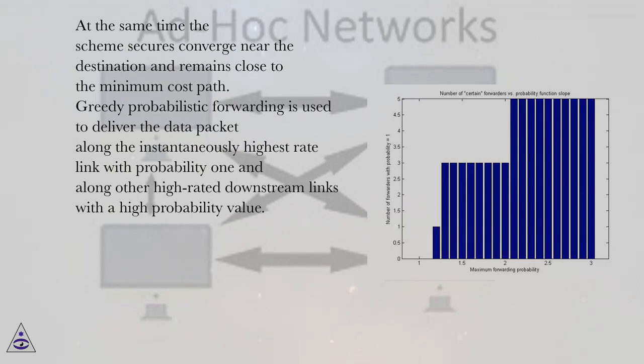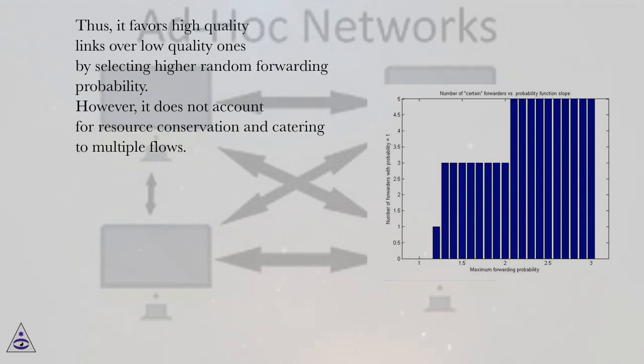Greedy probabilistic forwarding is used to deliver the data packet along the instantaneously highest rate link with probability 1 and along other high rated downstream links with a high probability value. Thus, it favors high quality links over low quality ones by selecting higher random forwarding probability. However, it does not account for resource conservation and catering to multiple flows.